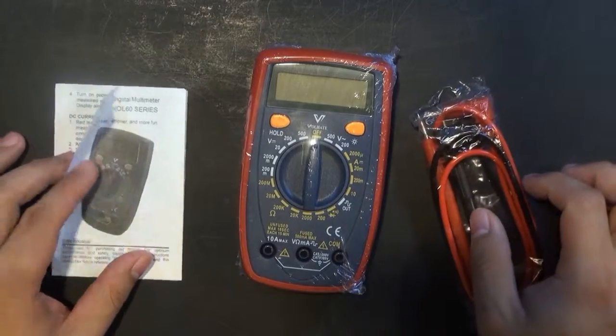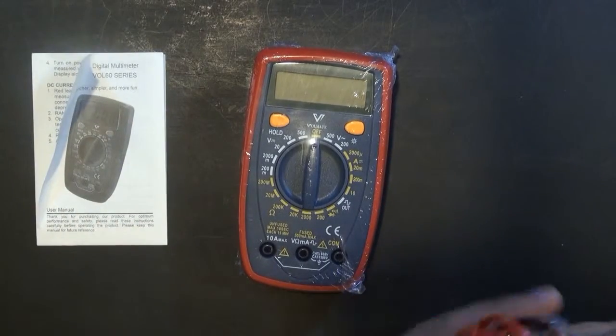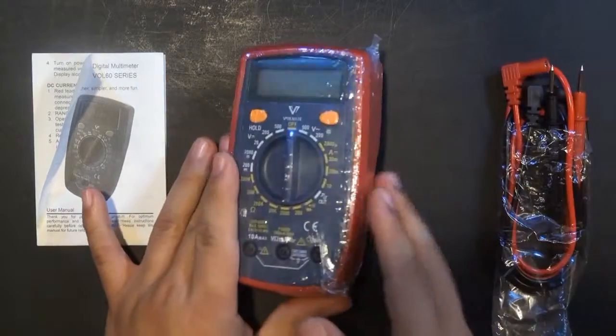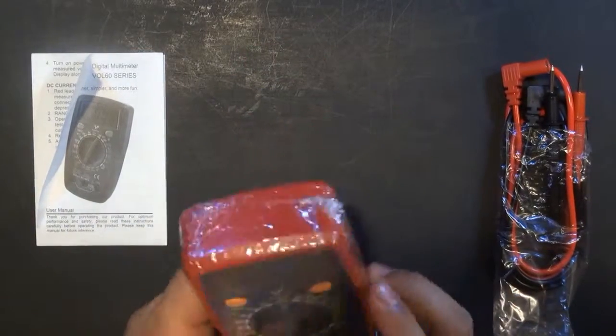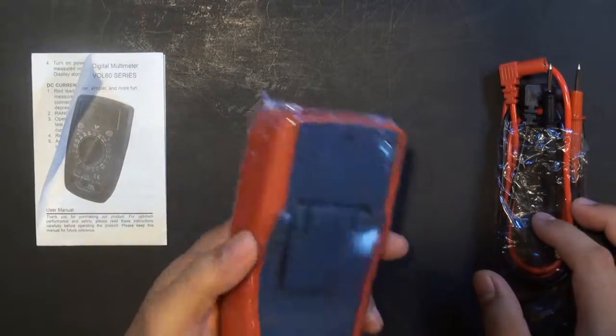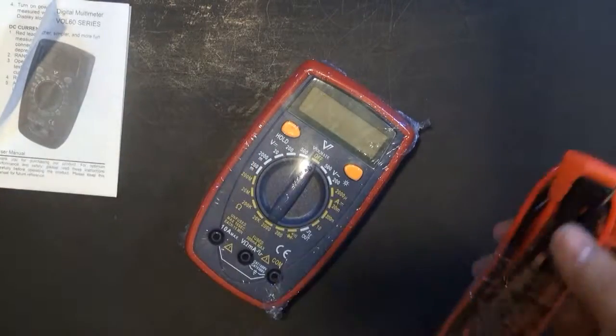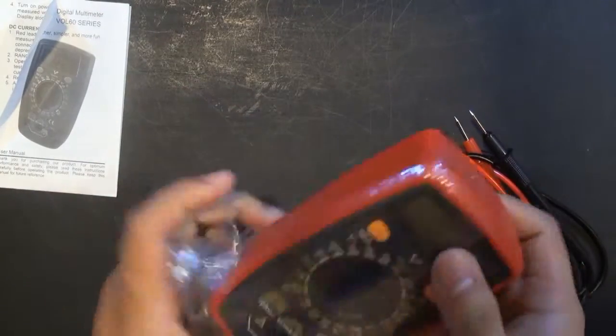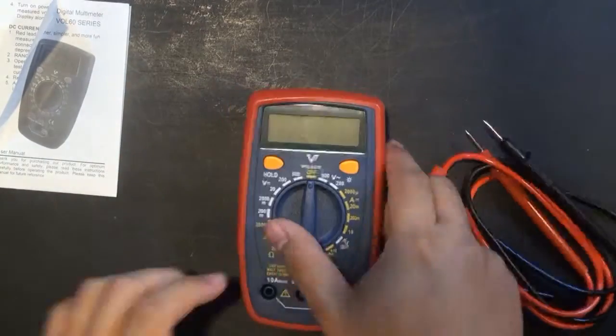Alright, so out of the box, I got a manual, the cable cords, and the probes, and the multimeter. And the multimeter is covered in plastic, so let's remove that.